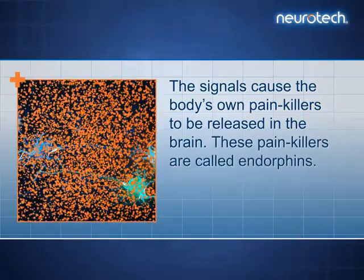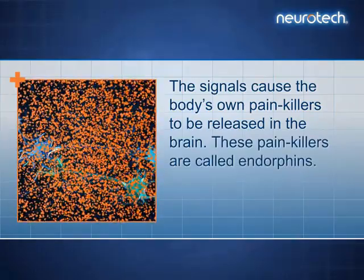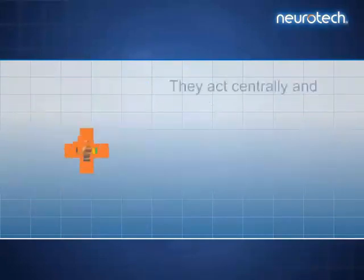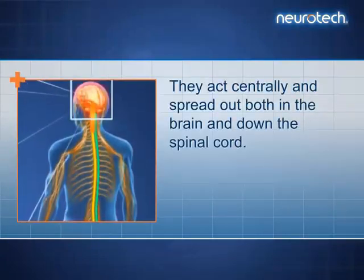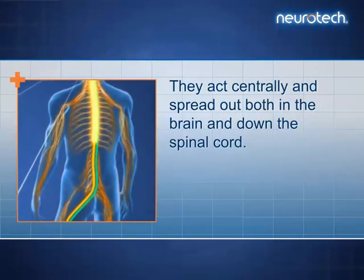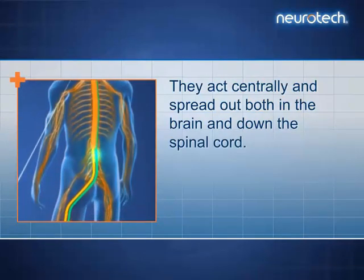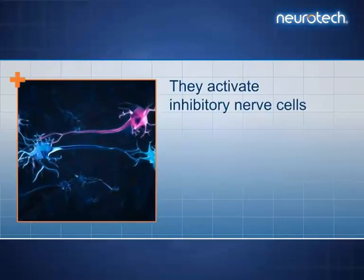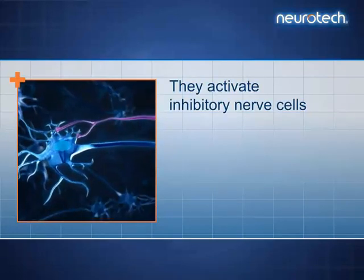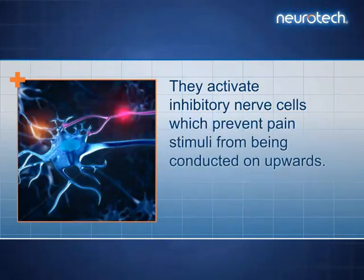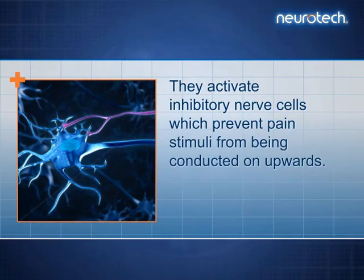The name comes from the words endogenous and morphine. They act centrally and spread out both in the brain and down the spinal cord. They activate inhibitory nerve cells which prevent pain stimuli from being conducted on upwards.